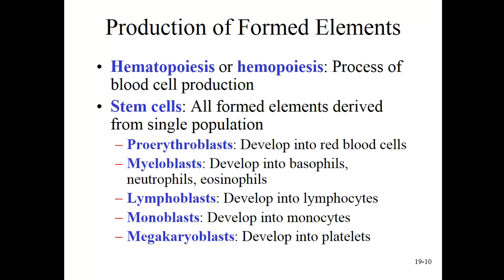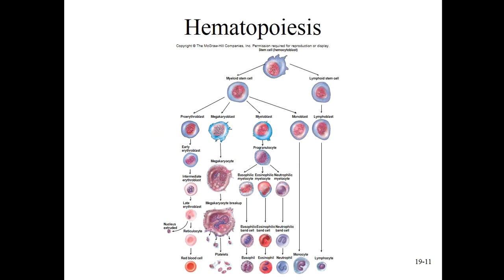How do we make the formed elements? The production of the formed elements is a process called hemopoiesis or hematopoiesis. This occurs in the bone marrow. It is the normal process, but when it turns abnormal, it can lead to blood cancers like lymphoma and leukemia. These are so-called stem cells — an immature form of a cell that through genetic expression becomes a more specialized form.